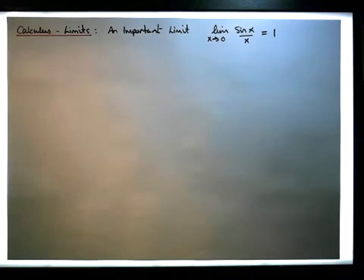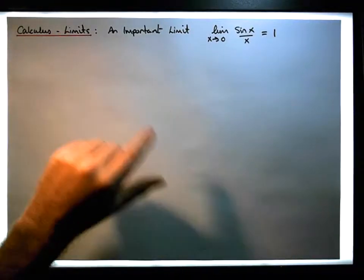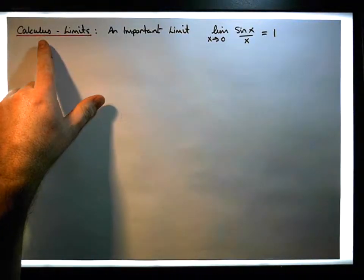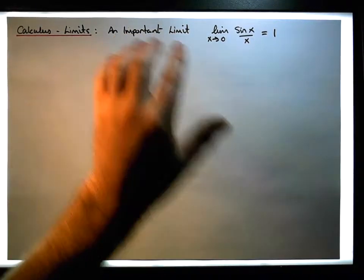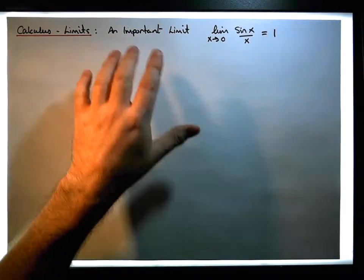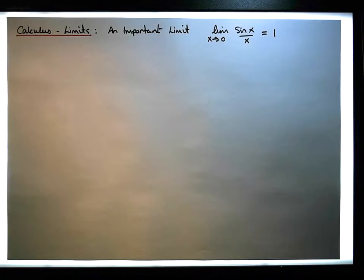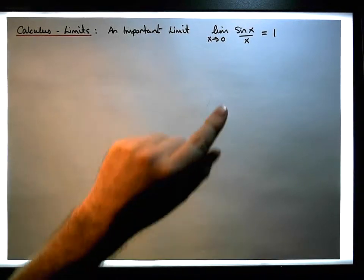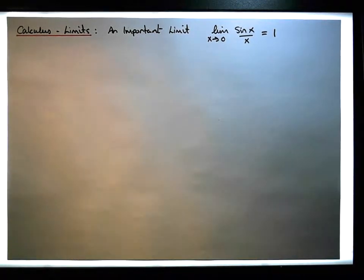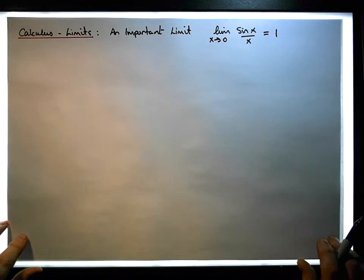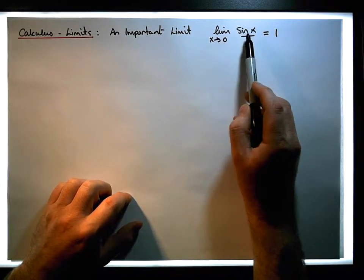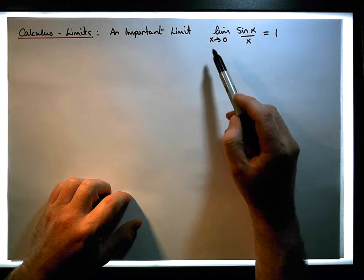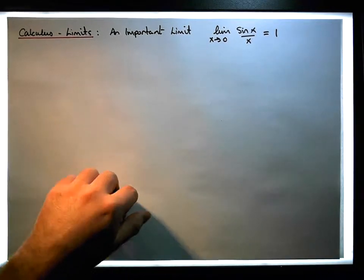Hi guys, this is Jonathan Lambert with Maths and Stats, and in this video — another video in our series dealing with calculus and limits — we're going to consider another important limit. We're going to take a different angle and show that the limit of sine x over x, as x tends to 0, is in fact equal to 1.